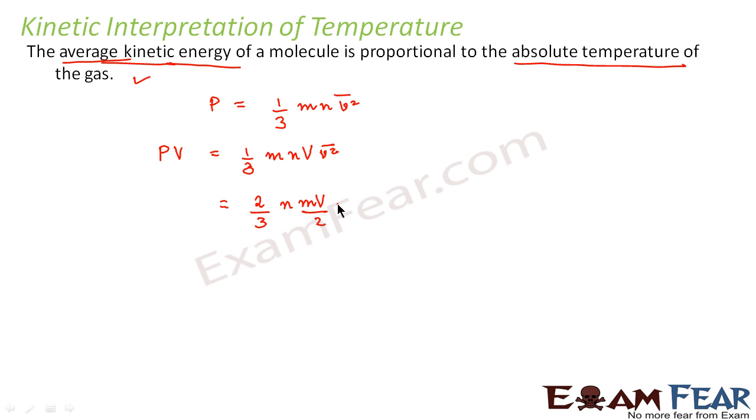by 2 v square bar. So this can be written as 2/3 n V times half m v square bar. I am just rearranging the terms, nothing else.